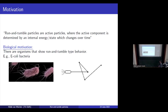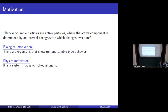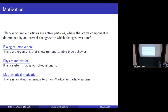This is a bit of a biological motivation, but there's also a motivation in physics, namely that it is a system that is out of equilibrium — we already saw an example of that today with the first talk. This is a really hot topic in physics. Also, more of a mathematical motivation is that there is a very natural extension to go from the Markov process model I will introduce to a model that is actually non-Markovian. From the Markov process, we hope to say some things about this non-Markovian model.